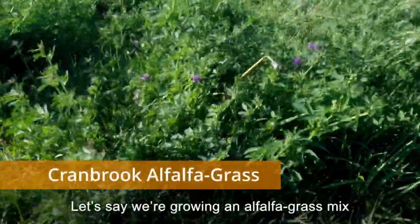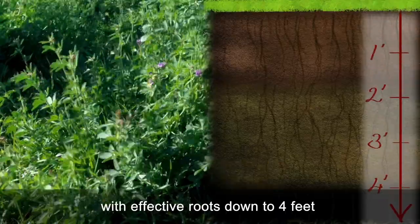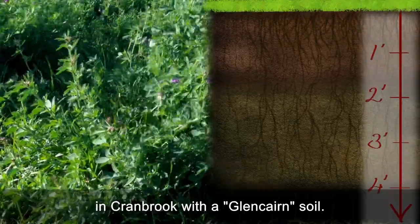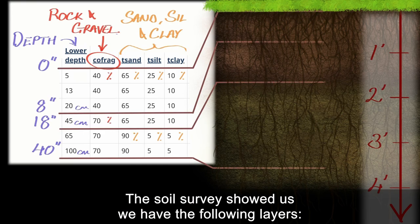Let's say we're growing an alfalfa-grass mix with effective roots down to four feet, in Cranbrook with a Glencairn soil.